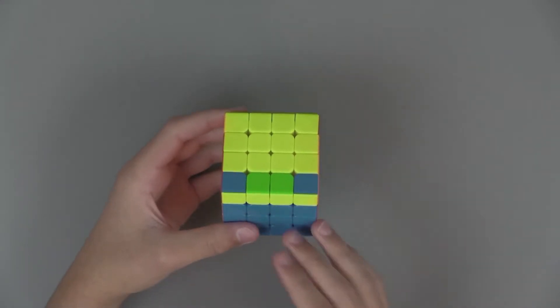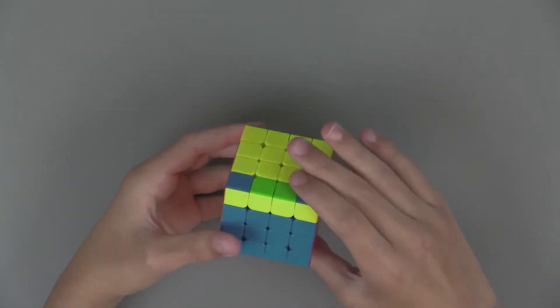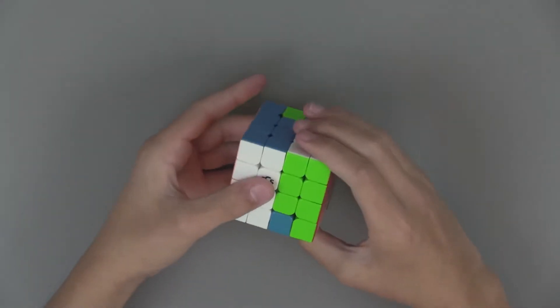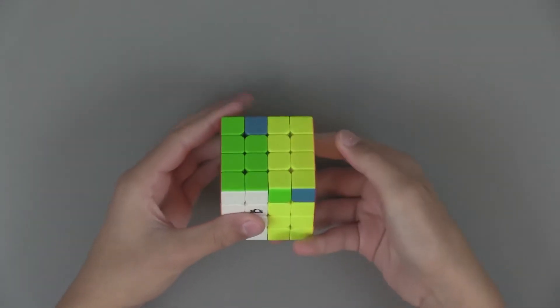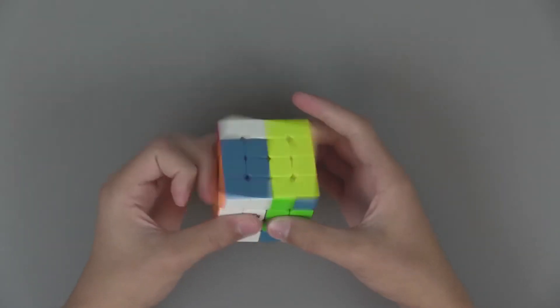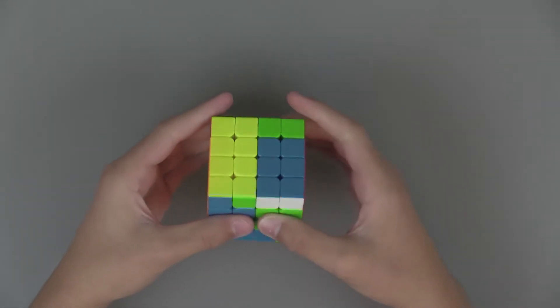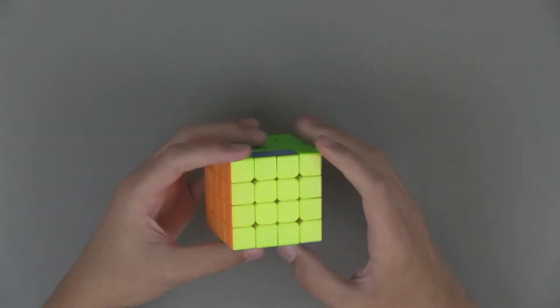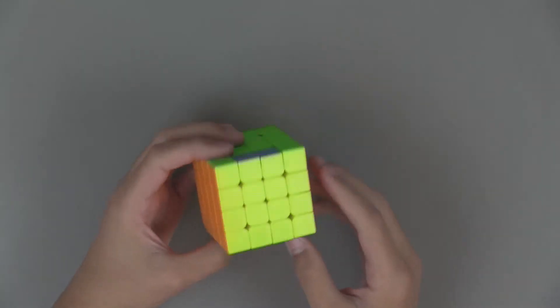This is probably the harder of all the parities. What you do is you bring the right side up and then double flick. Now rotate down, right side up, double flick, right side up, double flick, now down, double flick, left side down, double flick, right side down, double flick, right side up, double flick, right side down, double flick, right side down. And now your OLL parity is done.